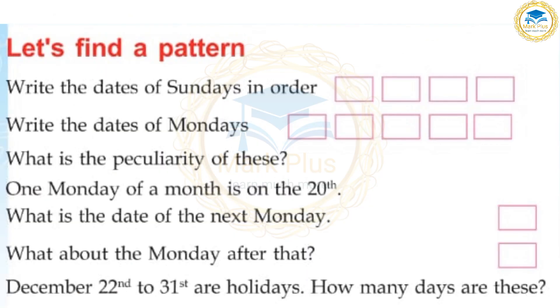Let's find a pattern. Read the dates of Sundays in order. Sunday is 14. Read the dates of Mondays. Monday is 14.